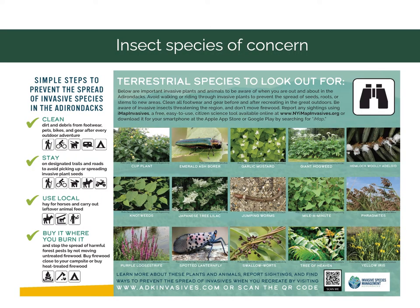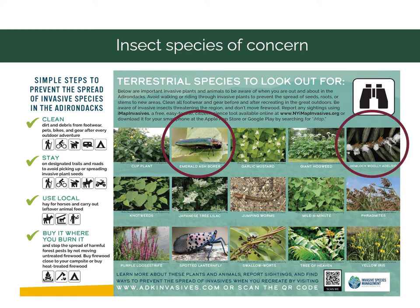Here's just an overview of some terrestrial insect species of concern that we cover at APIP. Today we're focusing on emerald ash borer, hemlock woolly adelgid, and spotted lanternfly.